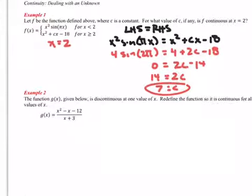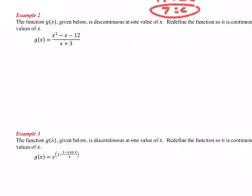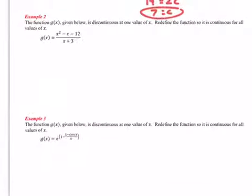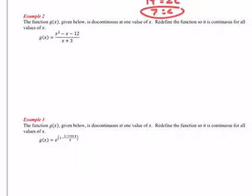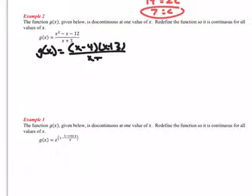Okay, example two, a little bit different. The function g of x given below is discontinuous, or not continuous, at one value of x. Redefine the function so that it is continuous for all values of x. So the first thing I would do here, anytime you see something in this form, is I would factor that. So I'm going to take g of x and set it equal to x minus 4 and x plus 3, all over x plus 3.